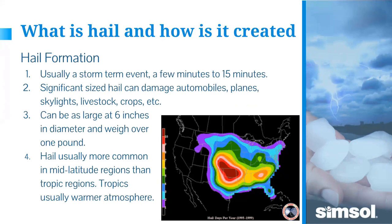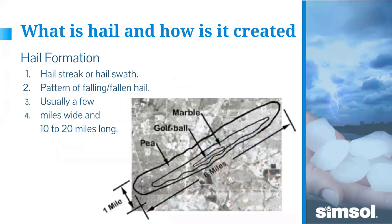A lot of hail information is found through the National Climatic Data Center or the National Weather Service. It can be a little difficult to track down, but older storms — once the NWS has verified all reports — are usually easy to access. Anything within 90 days is more difficult because many reports haven't been verified and adequately reported yet.